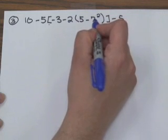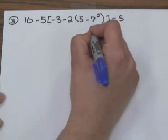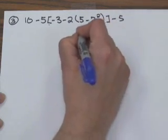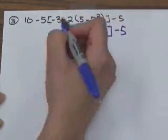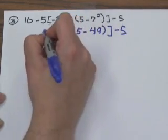5 minus 7 squared, you want to deal with your exponent. 7 times 7 gives me 49. I'm just going to bring this other part down, rewriting everything so I don't forget anything. Minus 3.